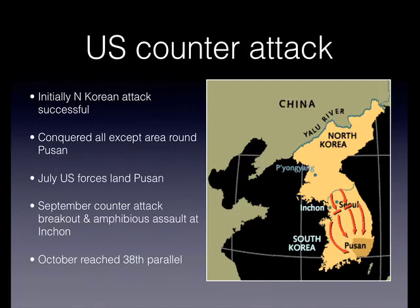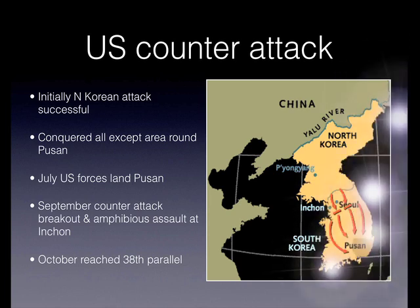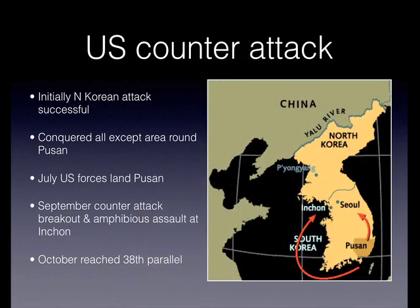Initially, the North Korean attack was successful. They conquered all of the peninsula except the area around Pusan. In July, UN forces had landed at Pusan but were pushed back to just that area. In September, however, utilising their advantage in the Navy, the UN launched a breakout combined with an amphibious assault at the port of Incheon, hoping to break North Korean supply lines. This was very successful, and by October of 1950, US, South Korean, and UN forces had reached the 38th parallel.